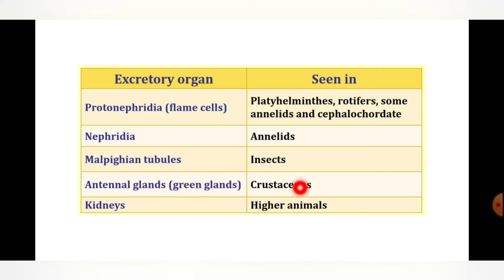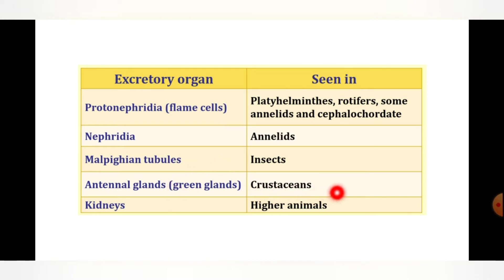Antennal glands, also called green glands, are present in crustaceans, which are also arthropods. Kidneys are highly developed excretory organs seen in higher animals, including fish, amphibians, reptiles, birds, and mammals including human beings.